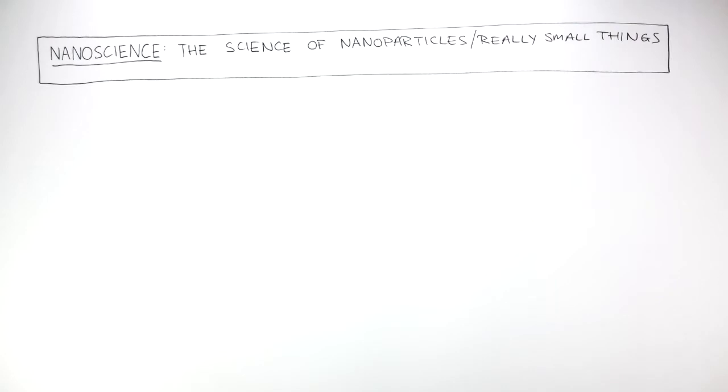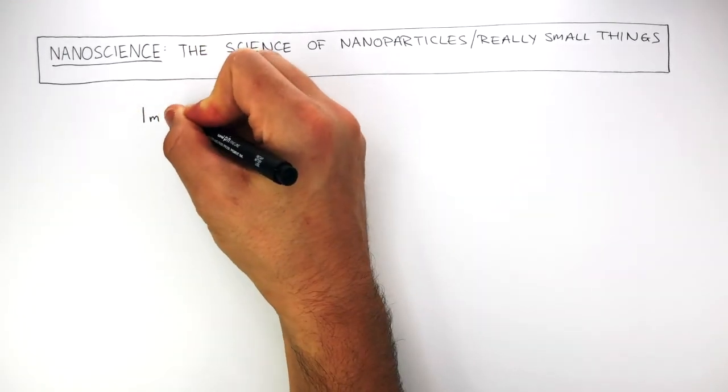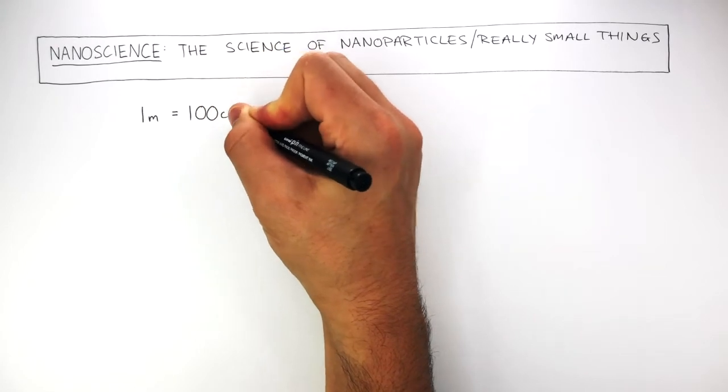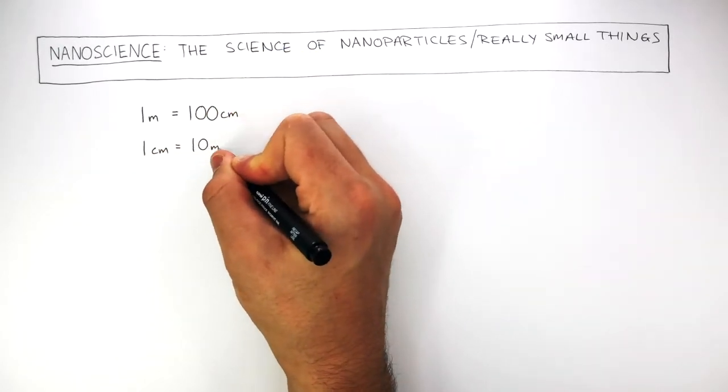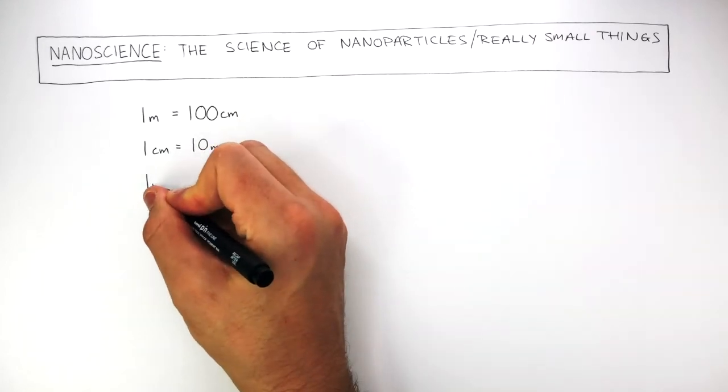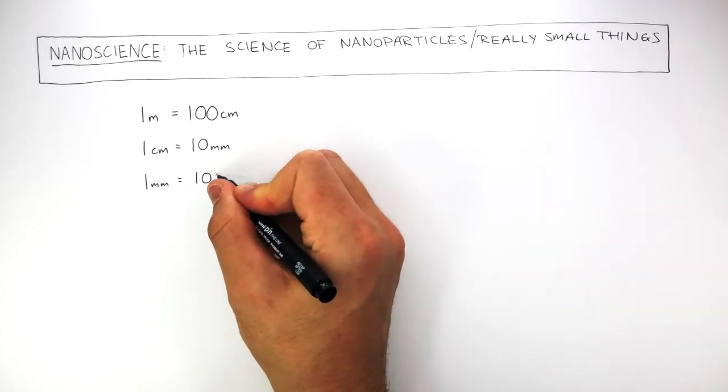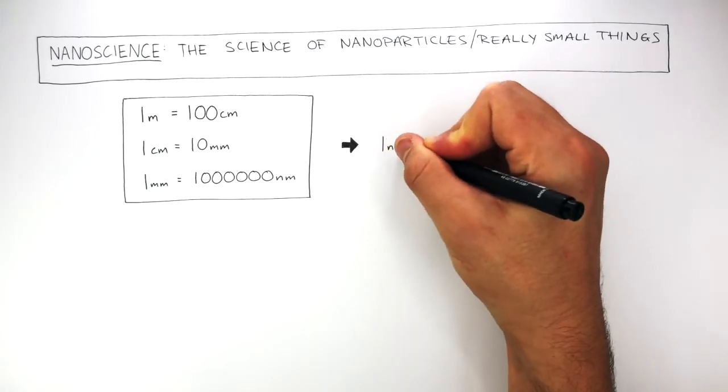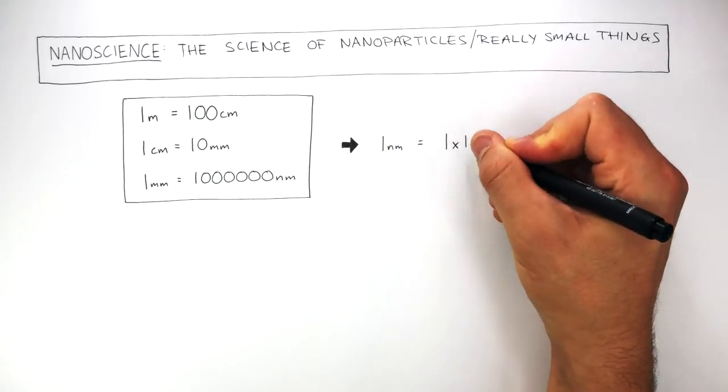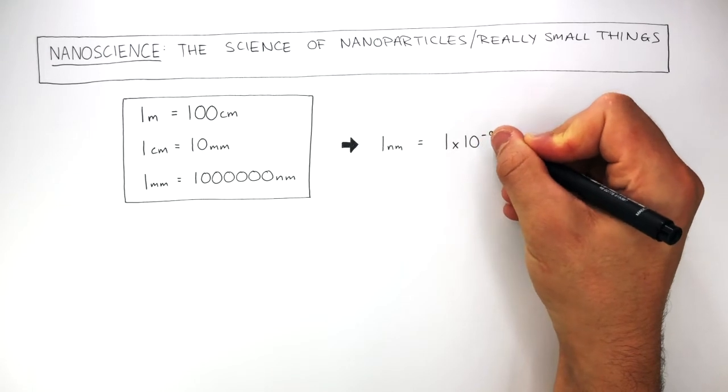To understand nanoscience, we first need to make sure we understand the difference between different units. So, 1 meter equals 100 centimeters, 1 centimeter equals 10 millimeters, and 1 millimeter equals 1 billion nanometers. 1 nanometer is equal to 1 times 10 to the power of minus 9 meters.